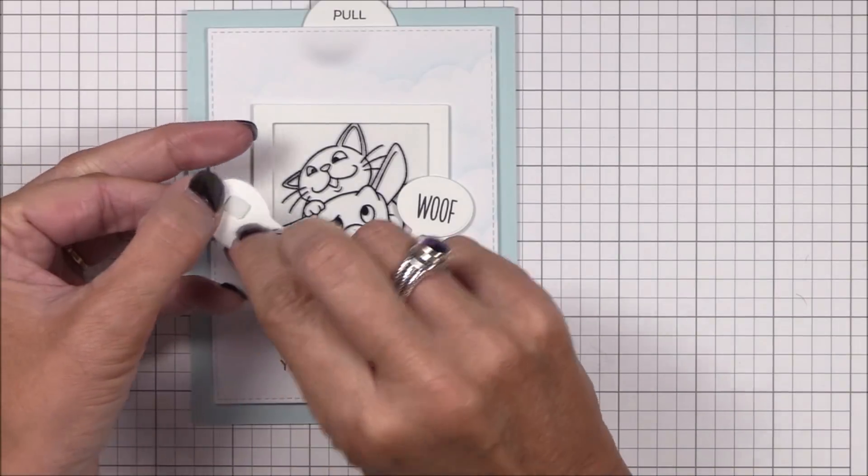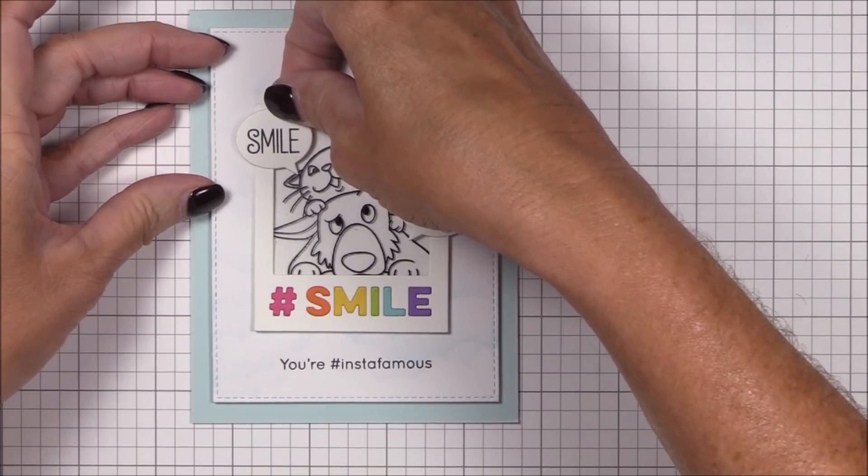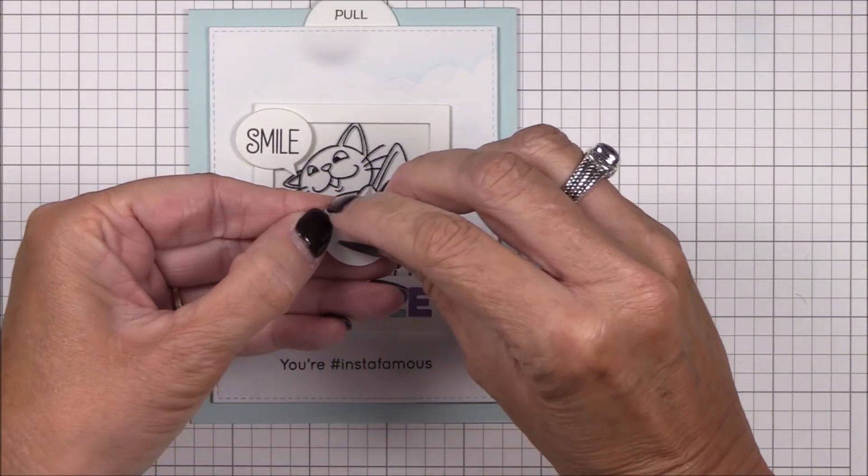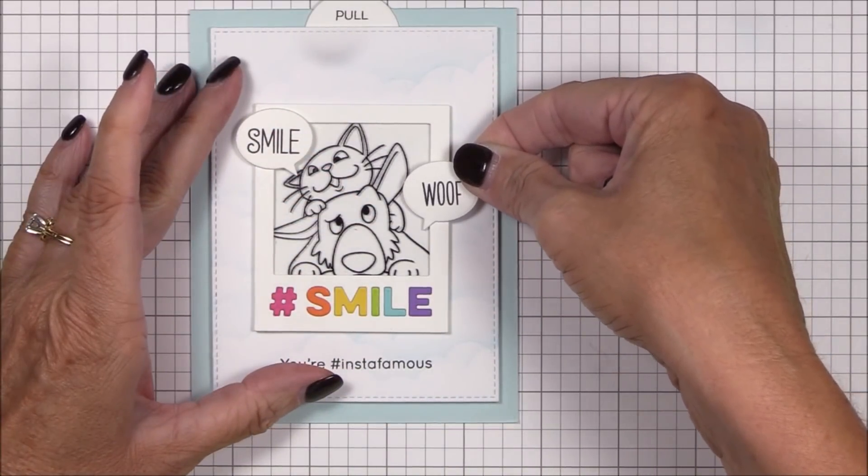I stamped the word smile from the picture perfect stamp set and the word woof from the lucky dog stamp set after a bit of stamp surgery, and then die cut them using the word bubble dies from the peekaboo wheel dynamics. I'm adhering them to the Polaroid frame using thin foam squares.